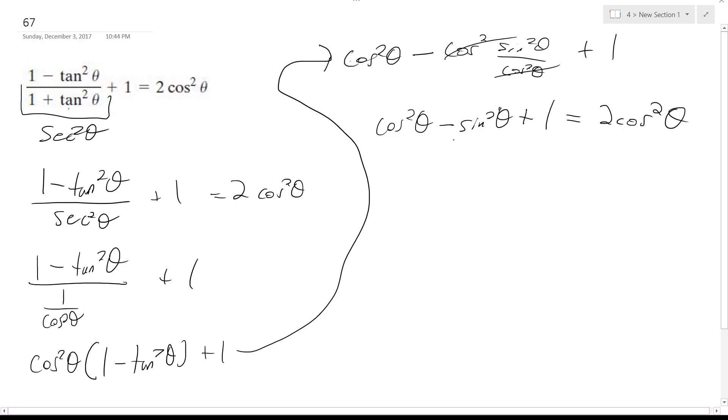So what I'm going to do is convert this so it becomes cosine squared theta minus 1 minus cosine squared theta, because that's an identity, plus 1.